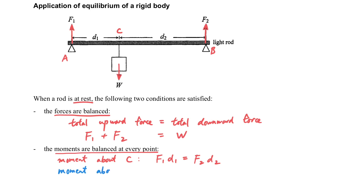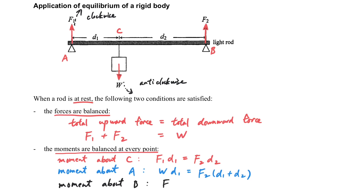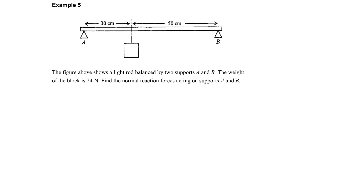Considering the moment about A, W contributes to the clockwise moment while F2 contributes to the anti-clockwise moment, giving another form of equation using W and F2. We can also formulate a third equation with the moment about B, where F1 and W contribute to the clockwise and anti-clockwise moments respectively. Which equation we choose depends on which is more convenient. Practice with different examples to develop intuition for choosing the most convenient pivot.